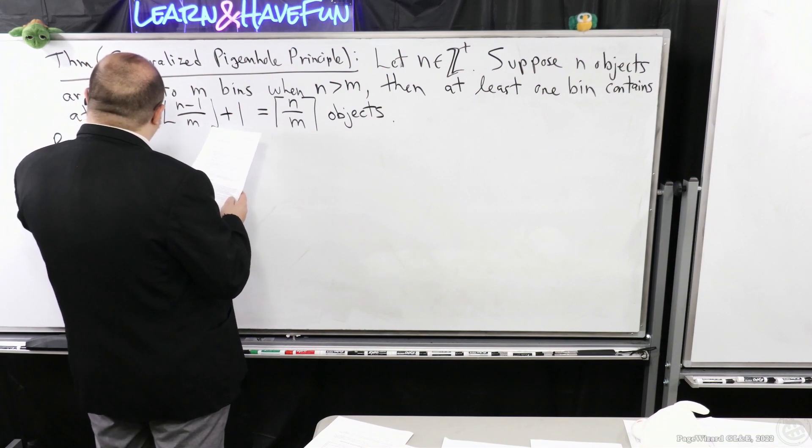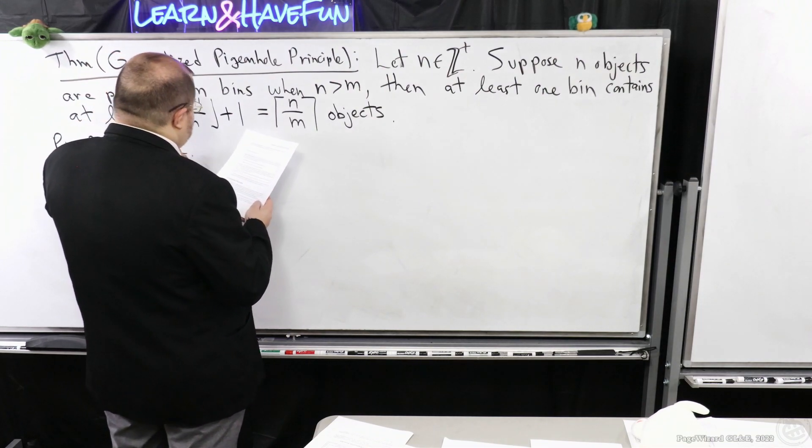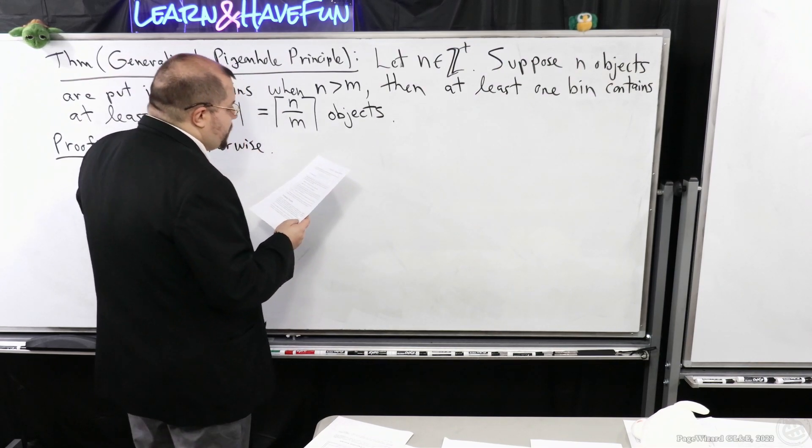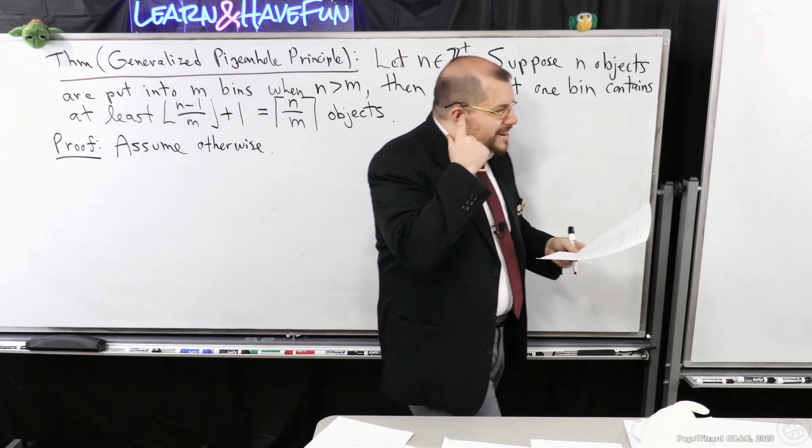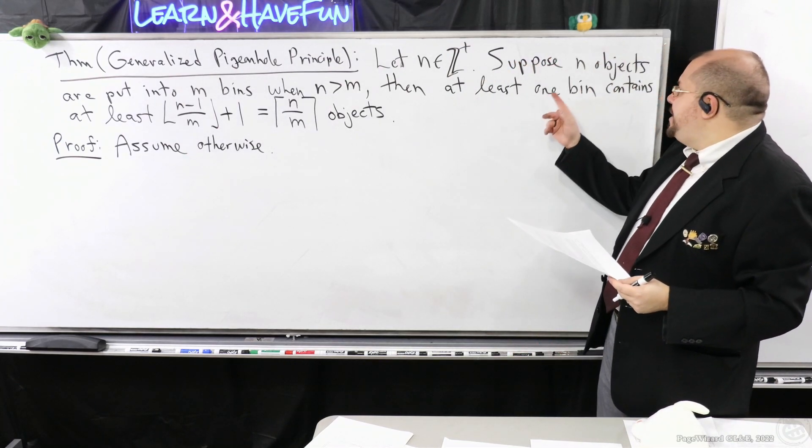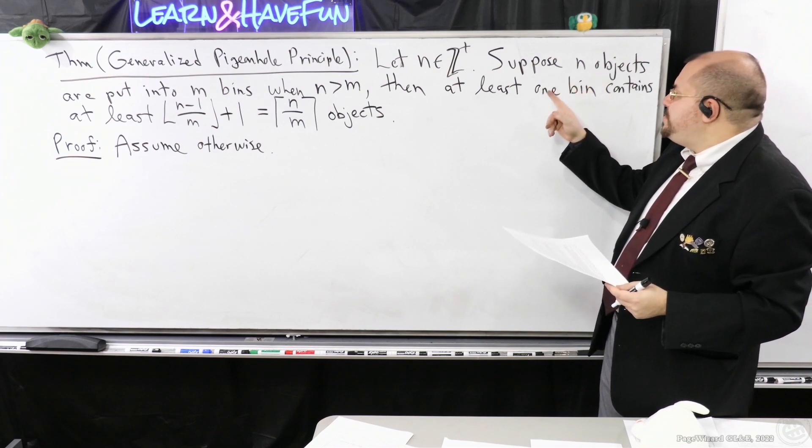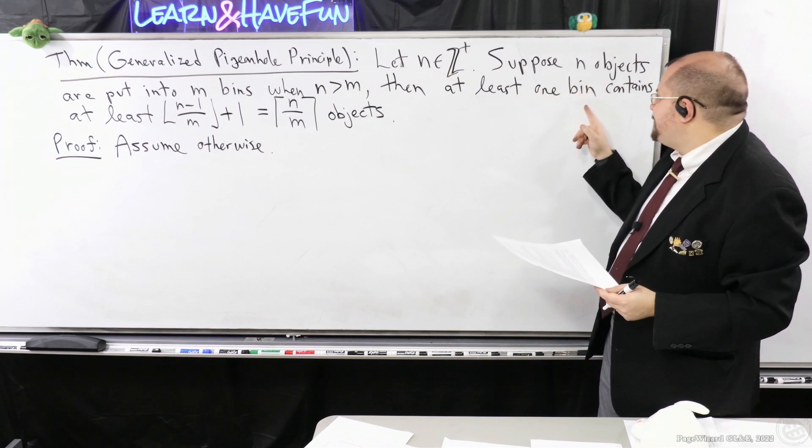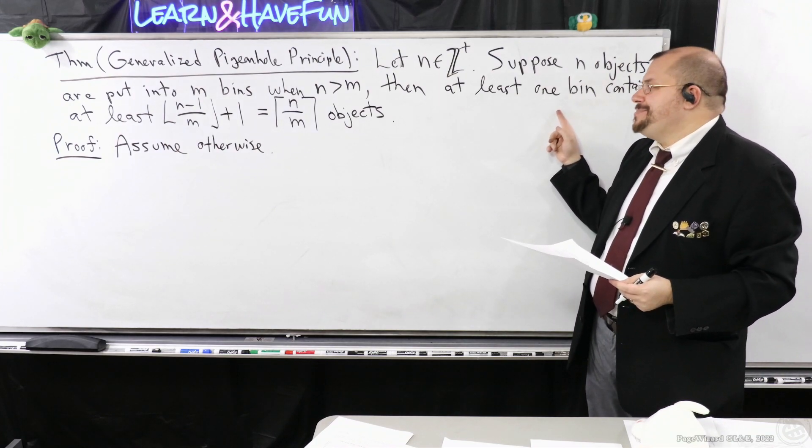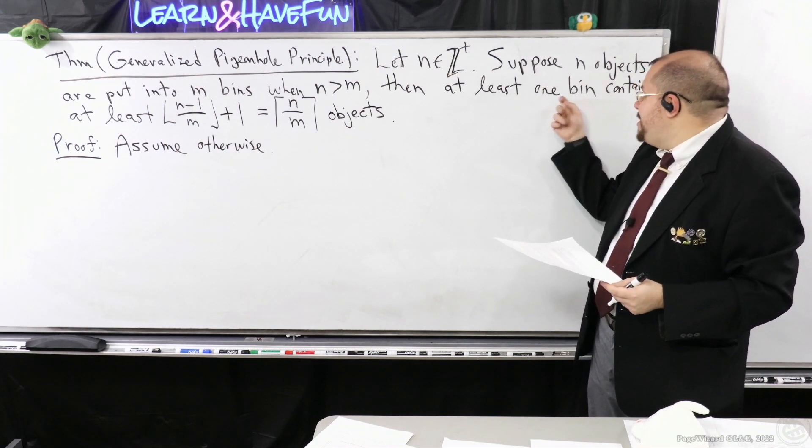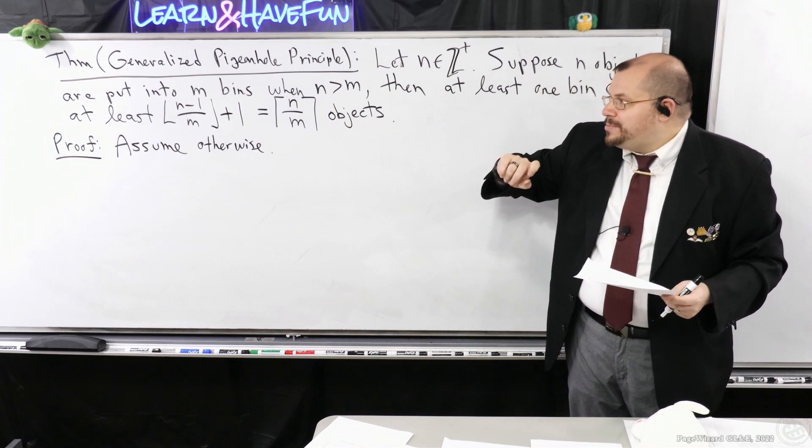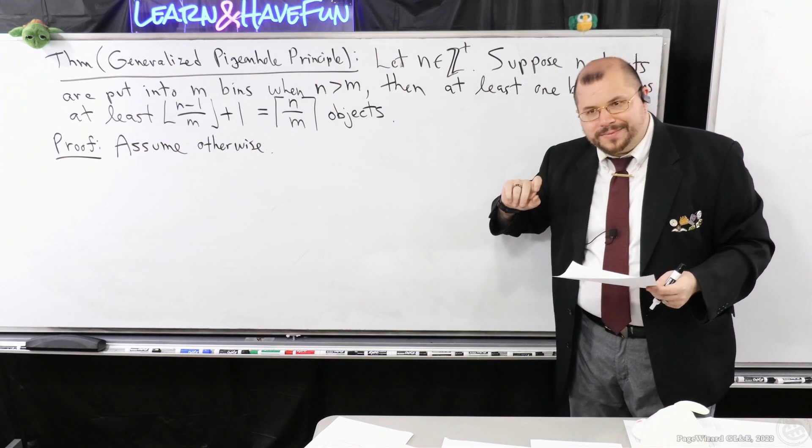So we're going to assume otherwise for the sake of a contradiction. Well let's think about that. What does it mean for this statement to not be true? Well it means that there's going to be no bin that has this property. But what does that mean? That means that every bin has at most that many objects minus one.